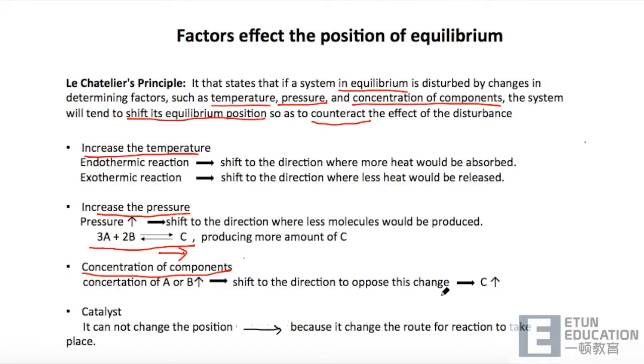反过来的话也是非常容易的,当 C 的 concentration increase,我想减少 C 在这个溶液中的 concentration,那这样子的话,这个反应就会 produce more A and B.